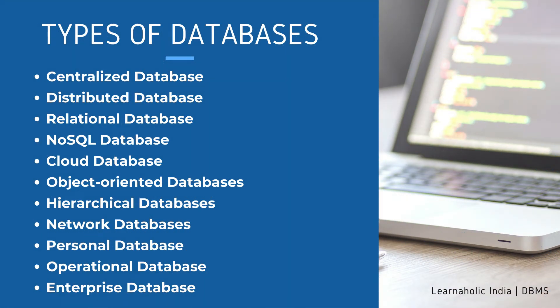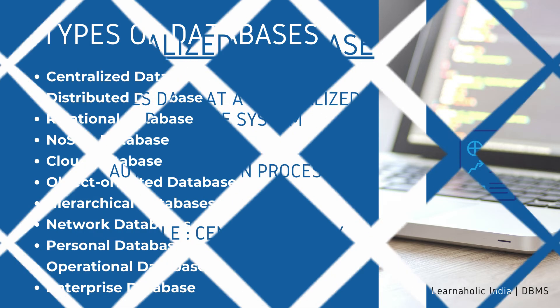Now we will learn types of database. There are various types of databases used for storing different varieties of data, such as: centralized database, distributed database, relational database, NoSQL database, cloud database, object-oriented databases, hierarchical databases, network databases, personal database, operational database, and enterprise database. We will see each and every type in detail.